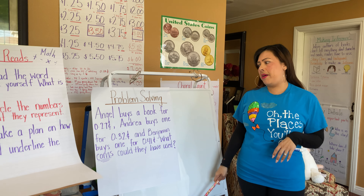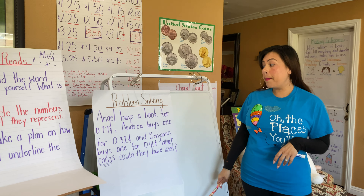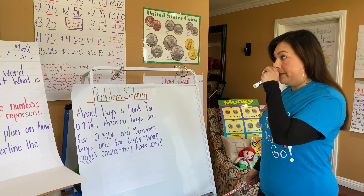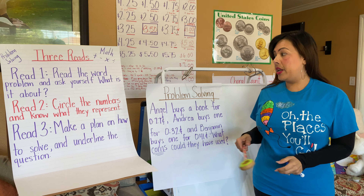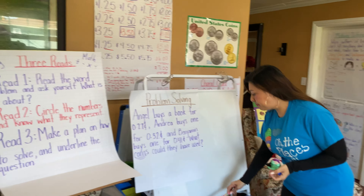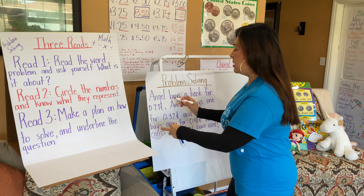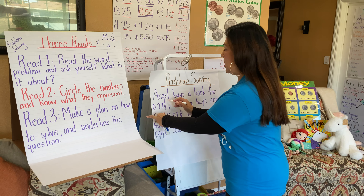We also always underline the question — always. You should know that because every week on our homework packets, we underline the question on Monday. So let's go over our problem for today: Angel buys a book for 27 cents, Andrea buys one for 32 cents, and Benjamin buys one for 41 cents. What coins could they have used?